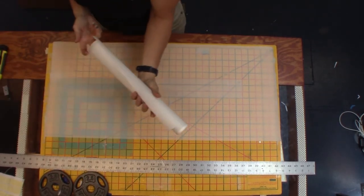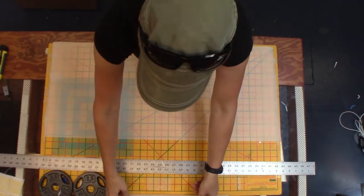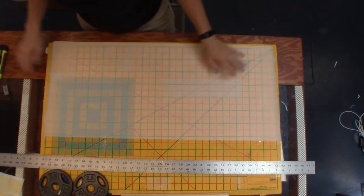I like to flip the paper over so that it is curling towards the mat instead of up.